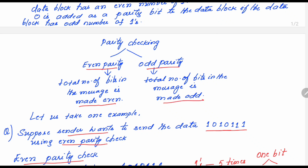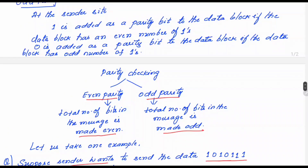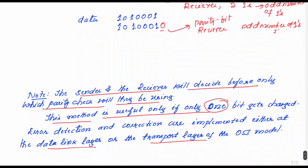This technique is useful only if one bit is getting changed. If more than one bit gets changed during transmission, there is a possibility the parity check will not detect it. In that case, we have another method called CRC — cyclic redundancy error detection — which I shall explain in my next session. I hope this session is useful to you all.